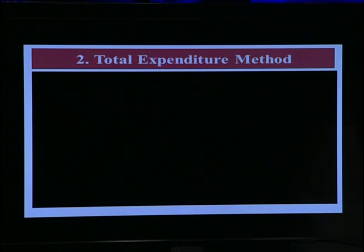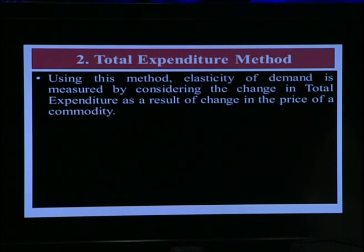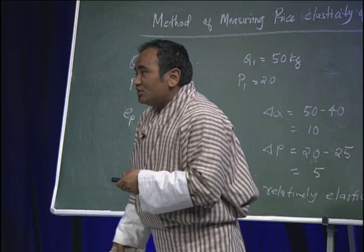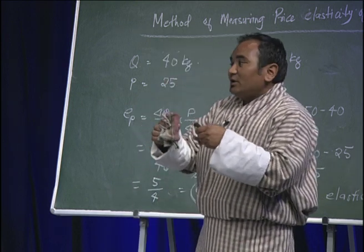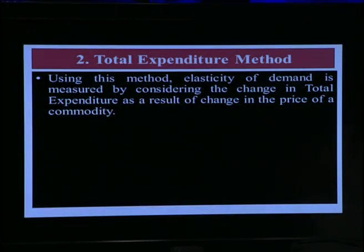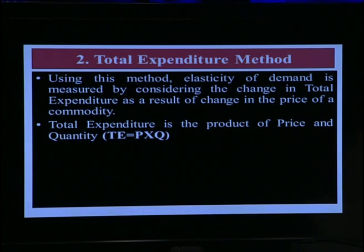The second method to calculate price elasticity of demand is the total expenditure method. Using this method, elasticity of demand is measured by considering the change in total expenditure as a result of change in the price of a commodity. The formula to calculate total expenditure is: TE = P × Q, where P is price and Q is quantity.